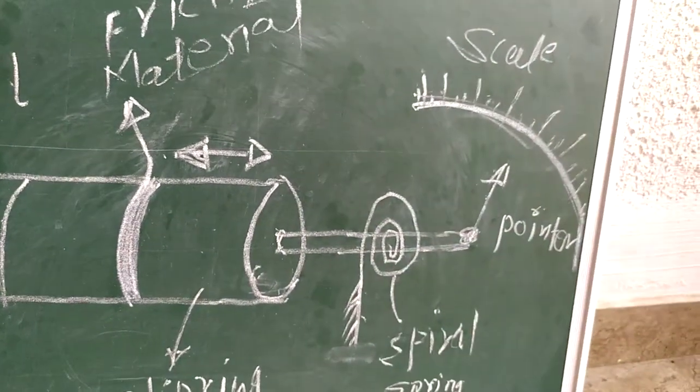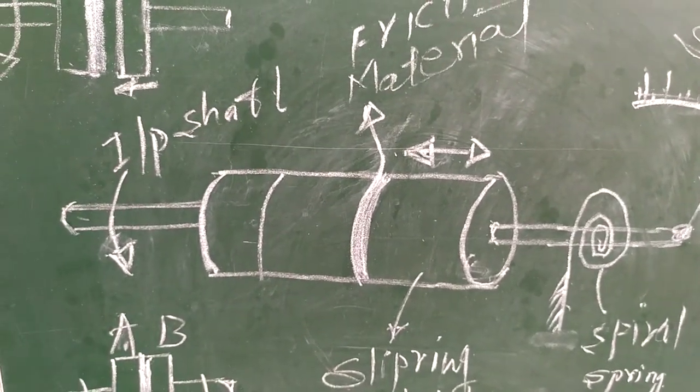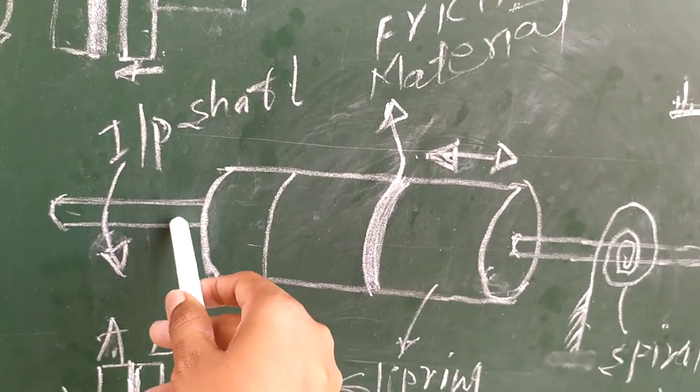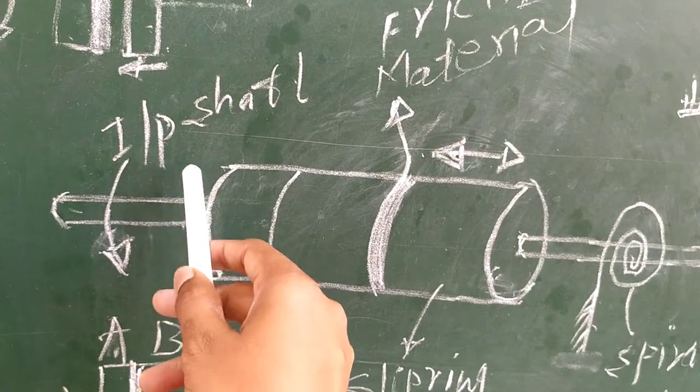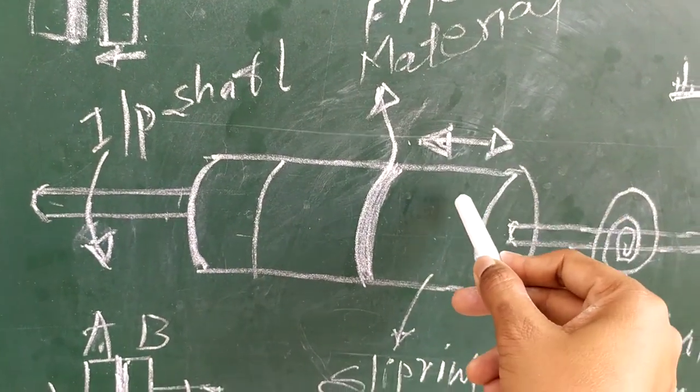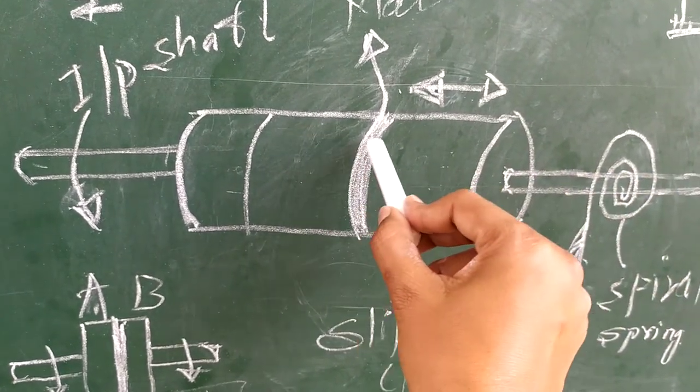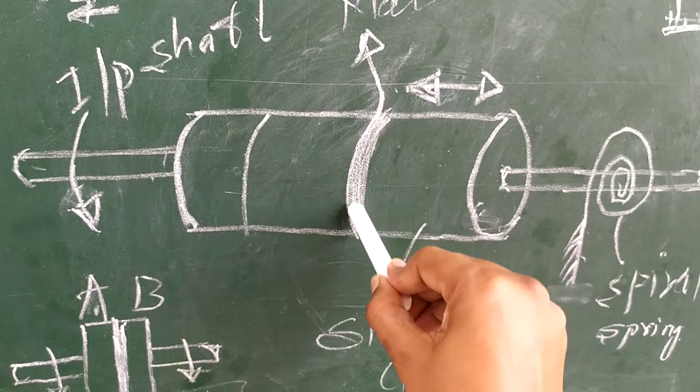Now let's concentrate on the working. When the input shaft starts rotating whose speed we have to measure, what we will do is we will push this slip ring clutch towards the left hand side and it will be fully engaged with this disk.